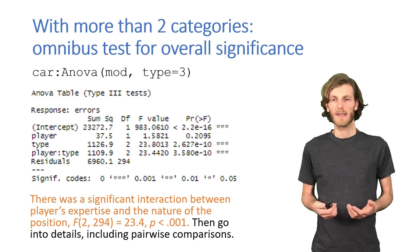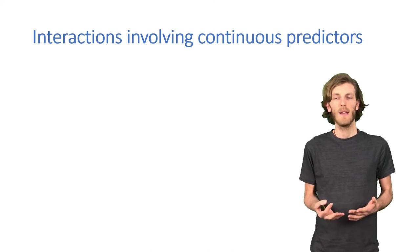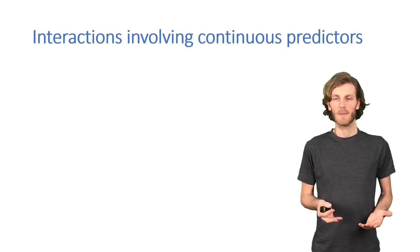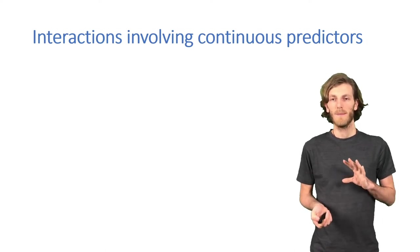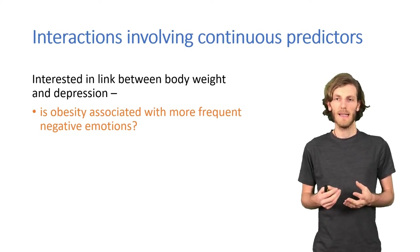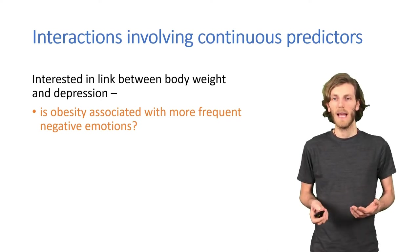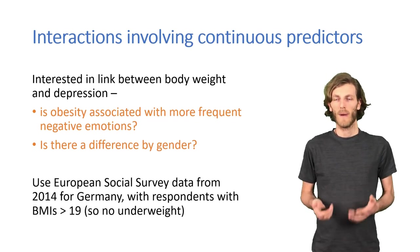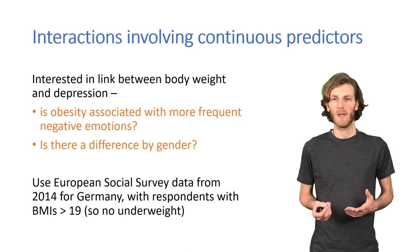Quite often, we're not just interested in categorical predictors, but also in continuous predictors. Some things are very similar when we look at interactions with continuous predictors. Some things are a little bit more complicated. But let's consider an example and say we're interested in the link between obesity and negative feelings. And we're also interested in whether that might be related to gender. We can do that using the data from the European Social Survey, the 2014 dataset that we looked at before.